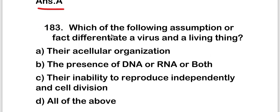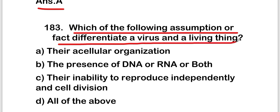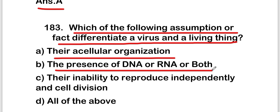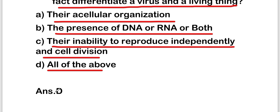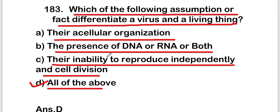The next question: which of the following assumptions or facts differentiate a virus from a living thing? Options are: their acellular organization, the presence of DNA or RNA or both, their inability to reproduce independently and by cell division, or all of the above. The right answer is option D — all of the above.